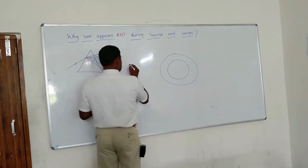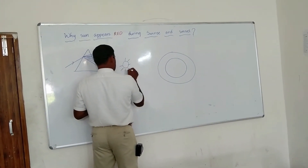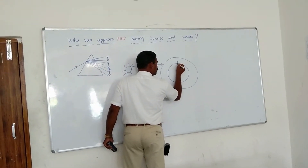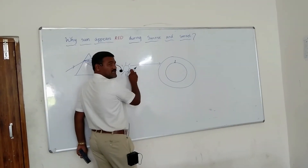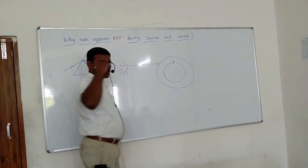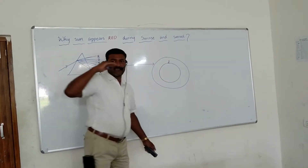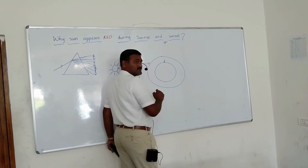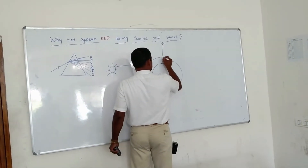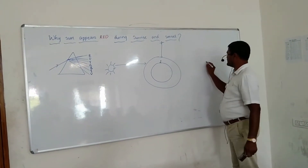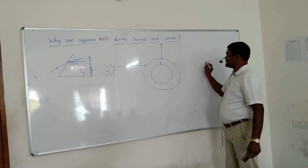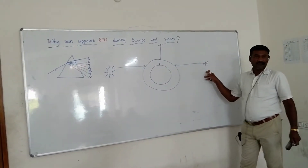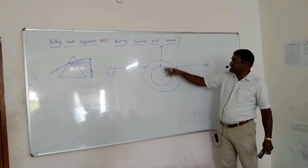Let us say this is the sun and this is the sunlight. Imagine one person standing here, looking at the sun during sunrise. At sunrise, the sun is at the horizon. In the afternoon, it is exactly overhead. And again during sunset, the sun is back at the horizon.